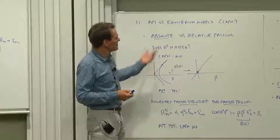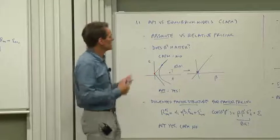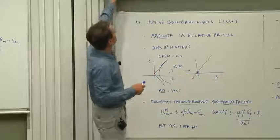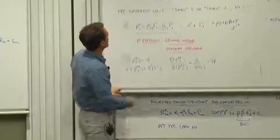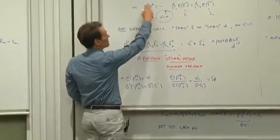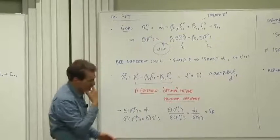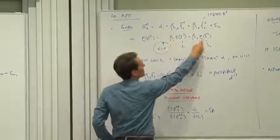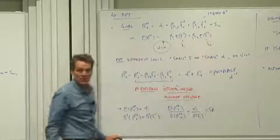The arbitrage pricing theory does something much less ambitious. It's relative pricing. In the arbitrage pricing theory, we try to find the expected returns of our portfolio in terms of the given expected returns of other portfolios.